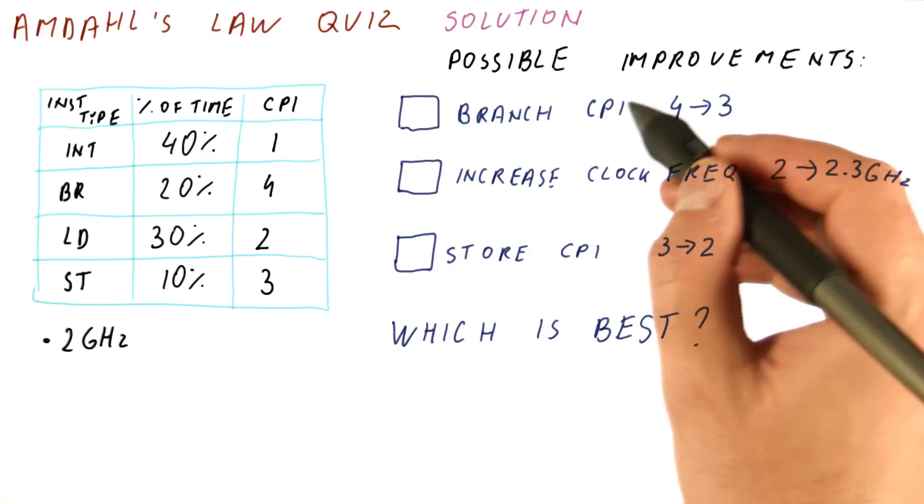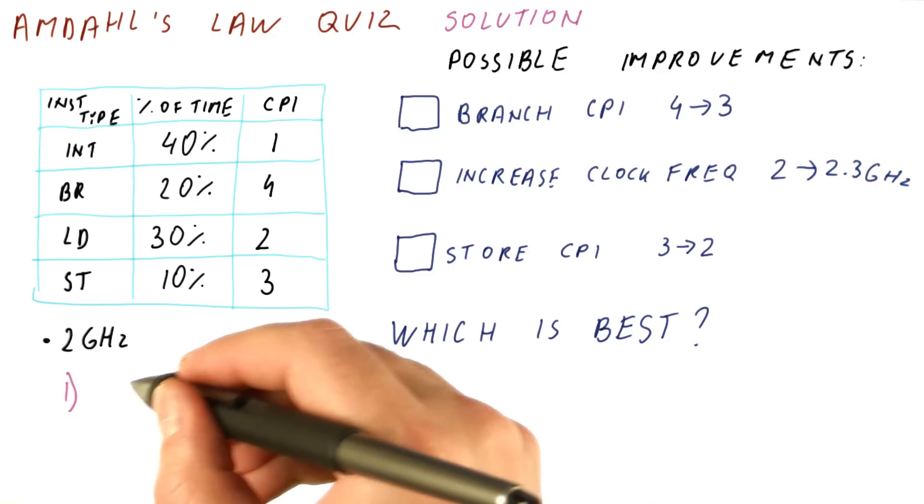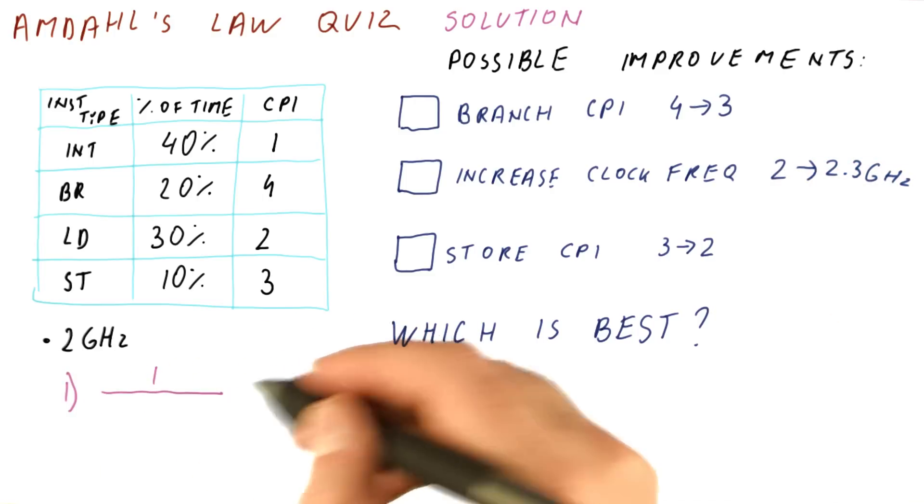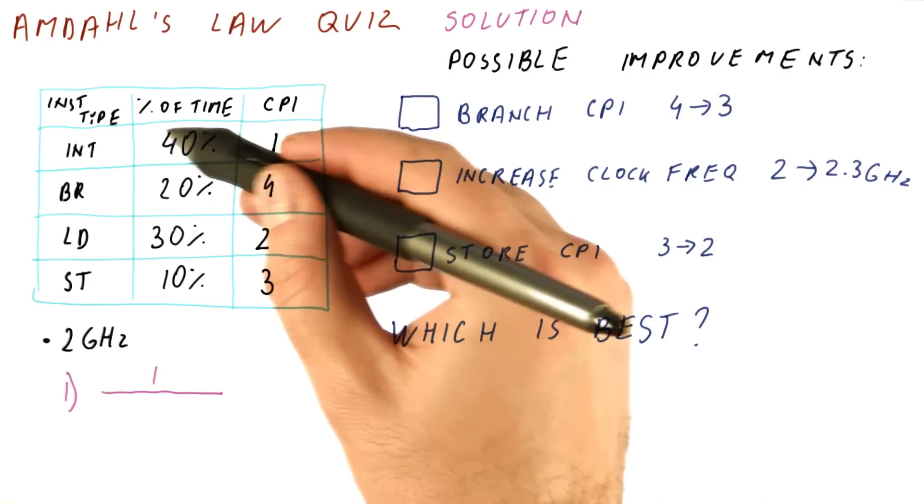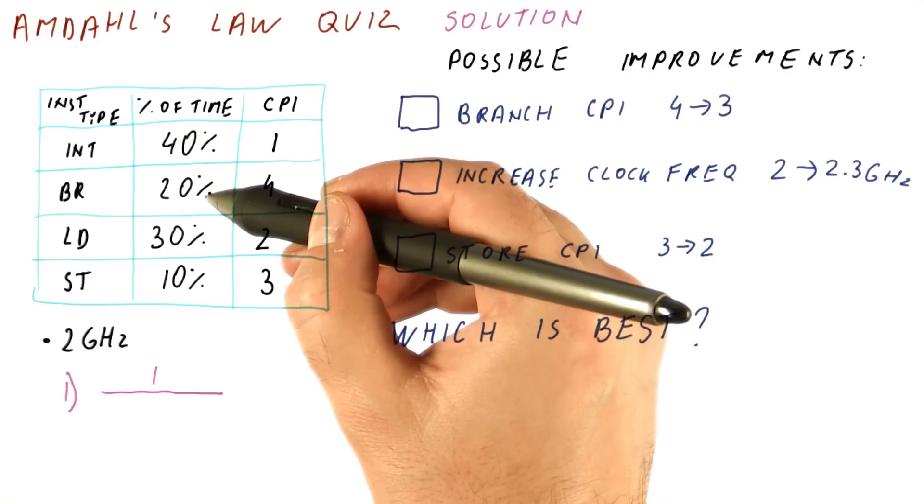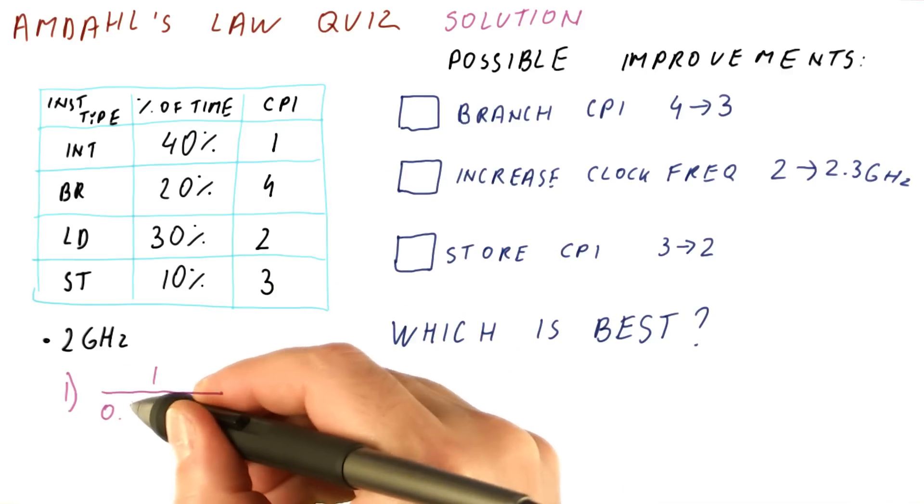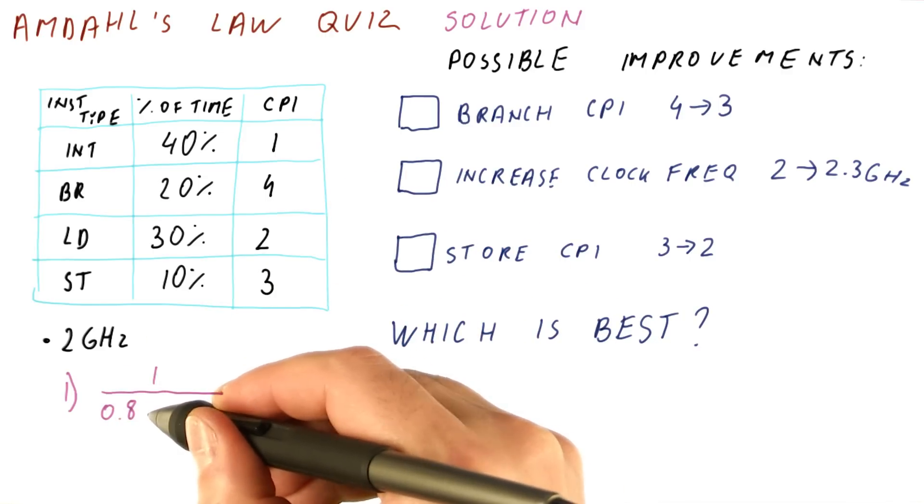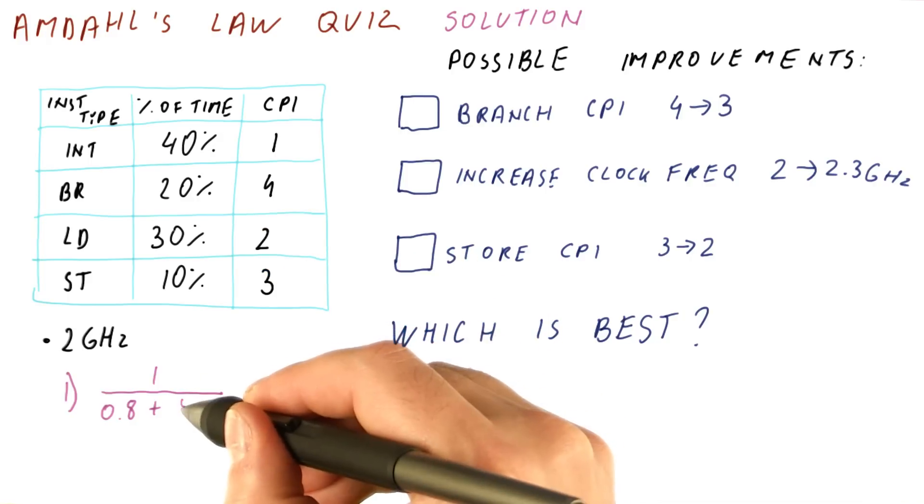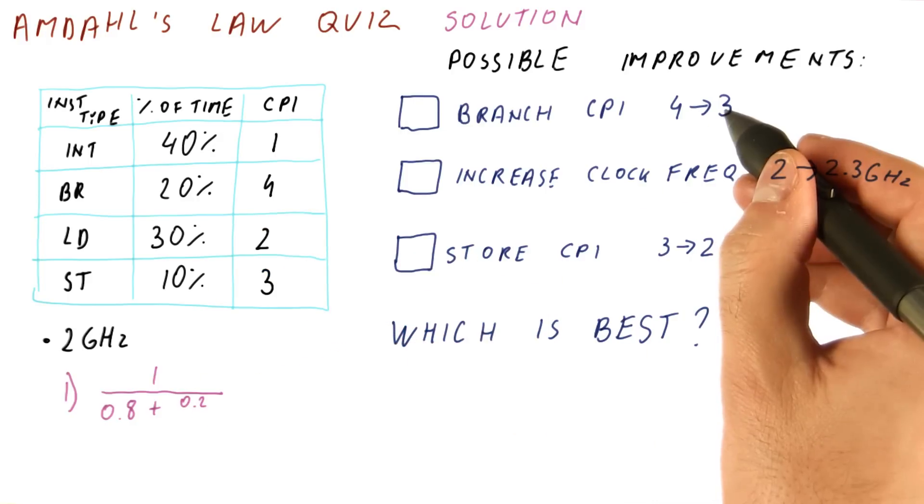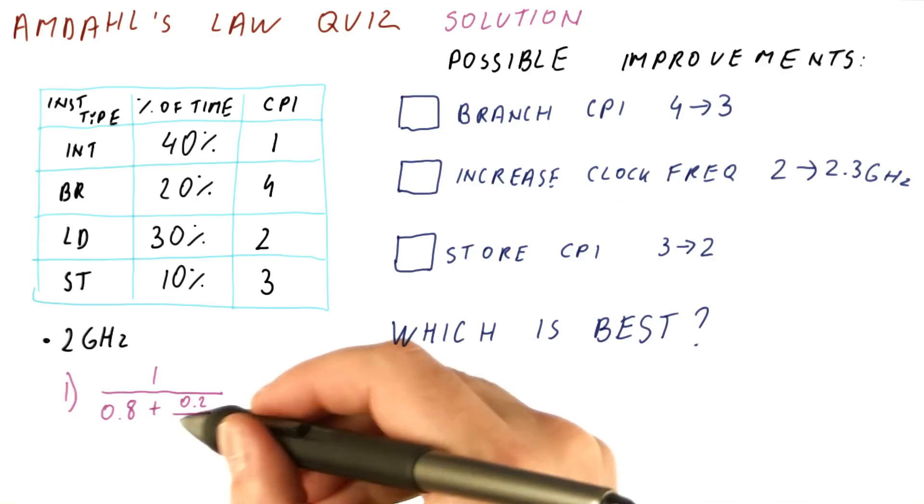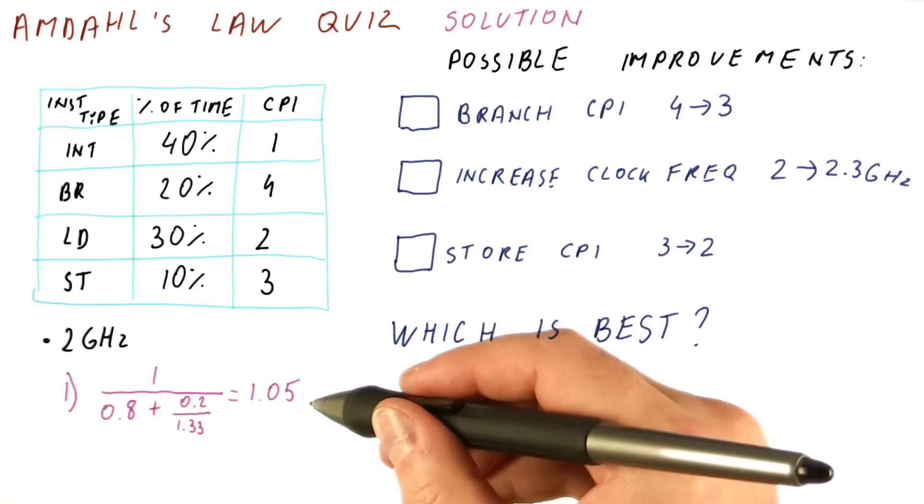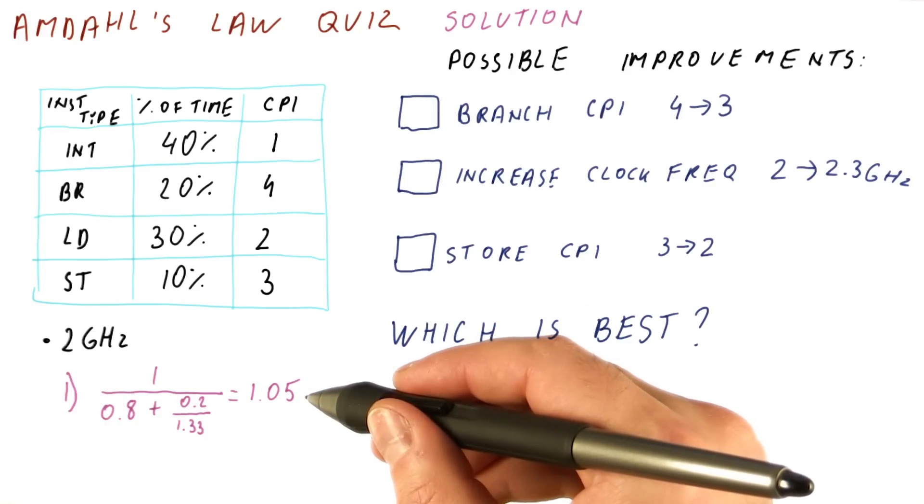For improving the branch CPI, this is our option one. The overall speedup is branches are happening 20% of the time. This is actually the percentage of time so we can apply Amdahl's law properly. So the unaffected execution time is 80%, and the 20% we do affect, we speed up by how much? By a factor of 4 over 3, so this is 1.33. And we get an overall speedup of 1.05.